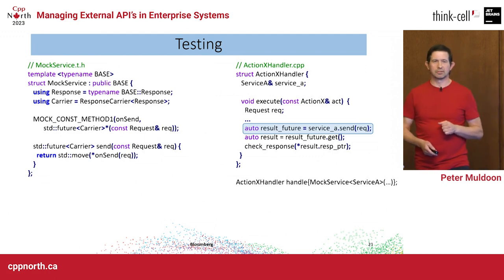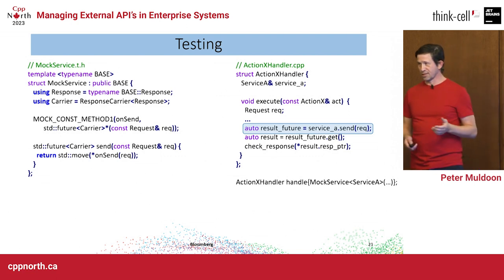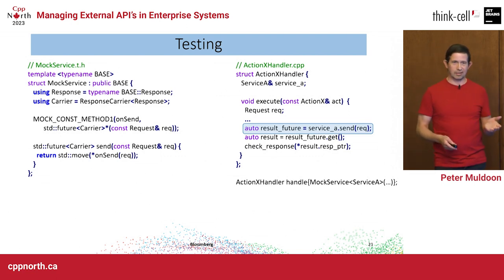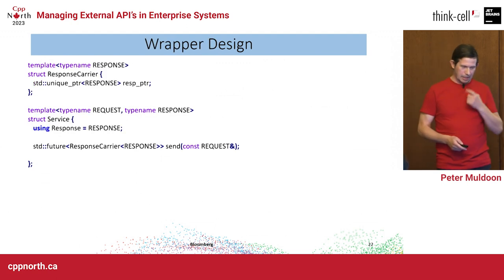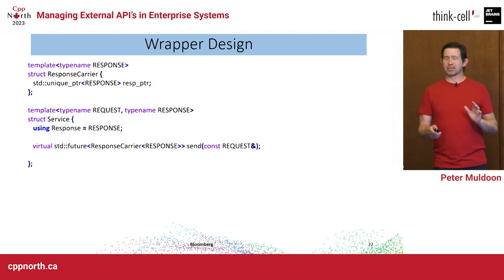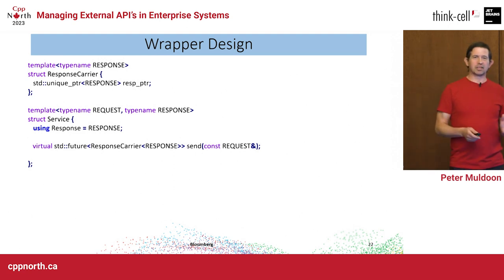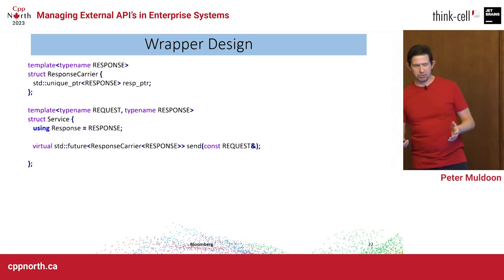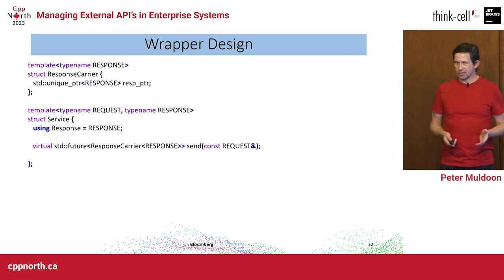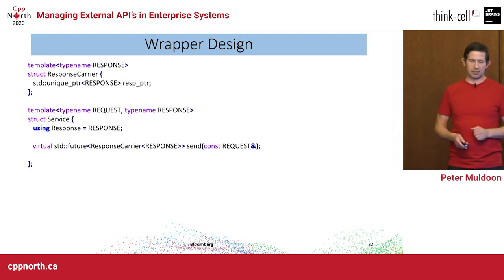Some people will say 'oh my god, you're using dynamic dispatch' — look, if this were a performance problem there are tricks for static polymorphism I would use. But this was not an issue. It's the simplest way to do it, so let's do it that way and change it if it needs to be.